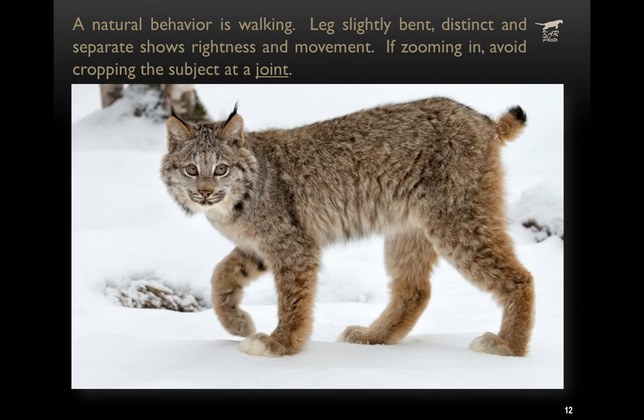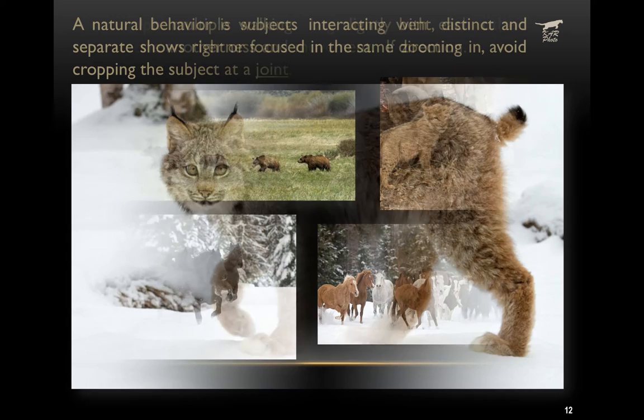A natural behavior is also walking, so look for times when all four legs are distinctly separate, and ideally one of the front legs is up a bit and slightly bent — it gives the feeling of forward motion. Sometimes you can't get the entire animal in the frame, and that's okay. When you crop in-camera, avoid cropping the subject on a joint — knees, toes, digits, elbows — and try not to clip the tips of tails or ears. Make it intentional: crop mid-body or mid-leg.